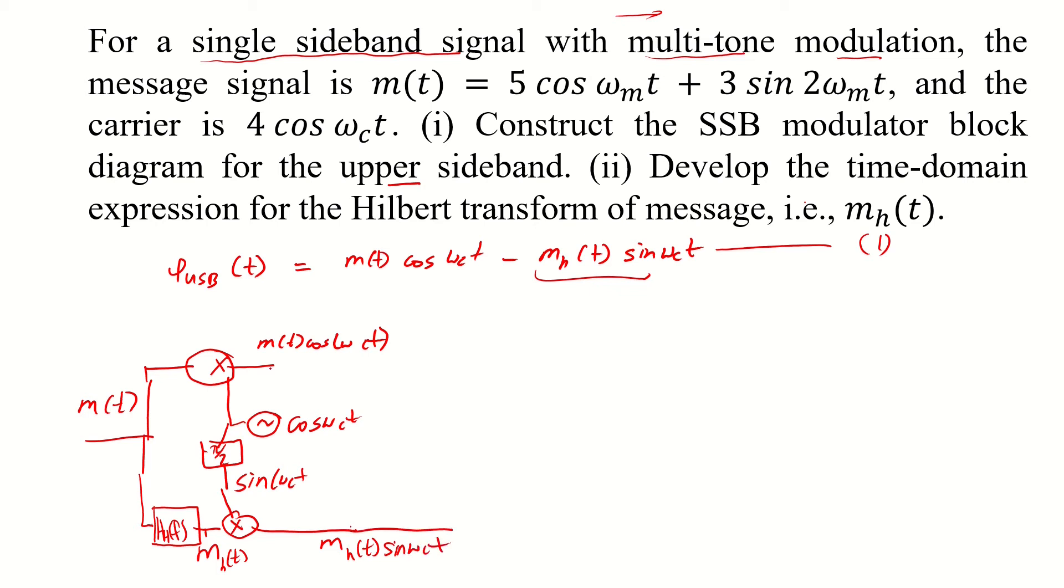And afterwards we have the summation block whereby the upper in-phase is added with the lower quadrature phase. In the quadrature phase we have a negative sign. And eventually we have an antenna by means of which we transmit the single sideband modulated signal.